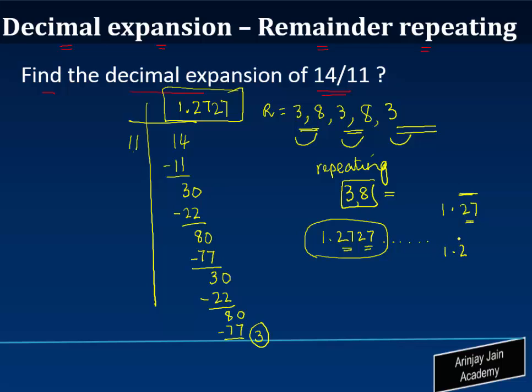So please note 1.27 is wrong. Even 1.27 is wrong. What is correct is you put 2 and 7 together and then put a bar over these two numbers together.